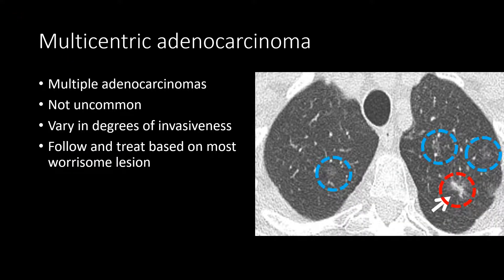Multicentric or multifocal adenocarcinoma — multiple adenocarcinomas within the lung — is actually not uncommon. A significant minority of patients with lung adenocarcinoma will have additional adenocarcinoma spectrum lesions varying in size, degree of invasiveness, and amount of solid or ground glass components. These lesions should be followed and treated based on the most worrisome one. The example shows several purely ground glass nodules likely representing pre-invasive lesions in blue, and a part-solid nodule with an ill-defined solid component representing minimally invasive adenocarcinoma in red.